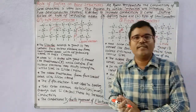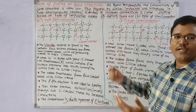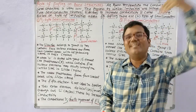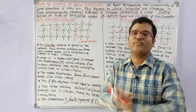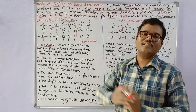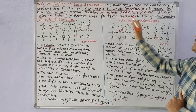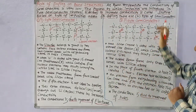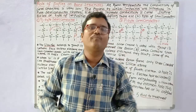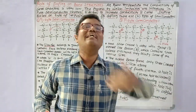At room temperature, the conductivity of semiconductors is very low. Doping is the process by which impurities are introduced in pure semiconductor crystals like silicon or germanium to increase conductivity. That is the goal of doping — to increase conductivity.